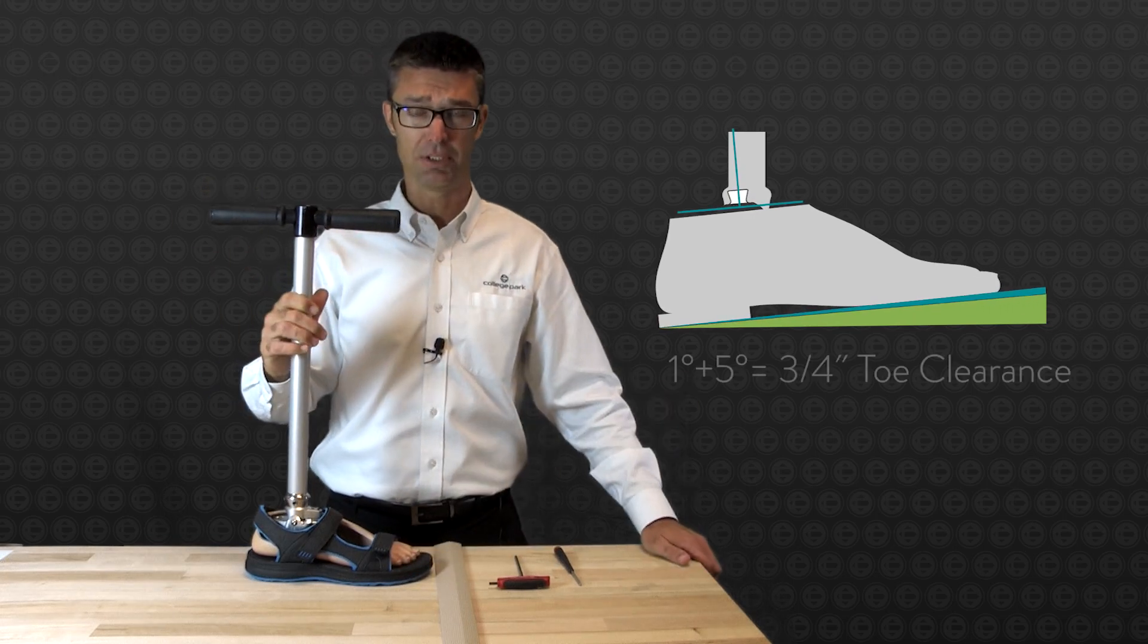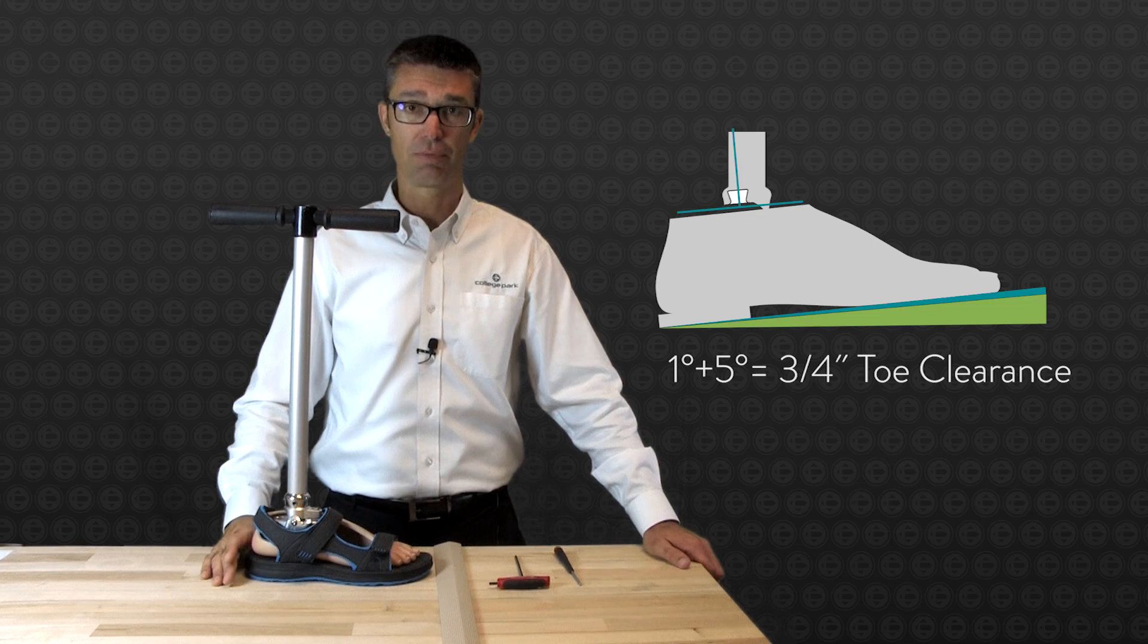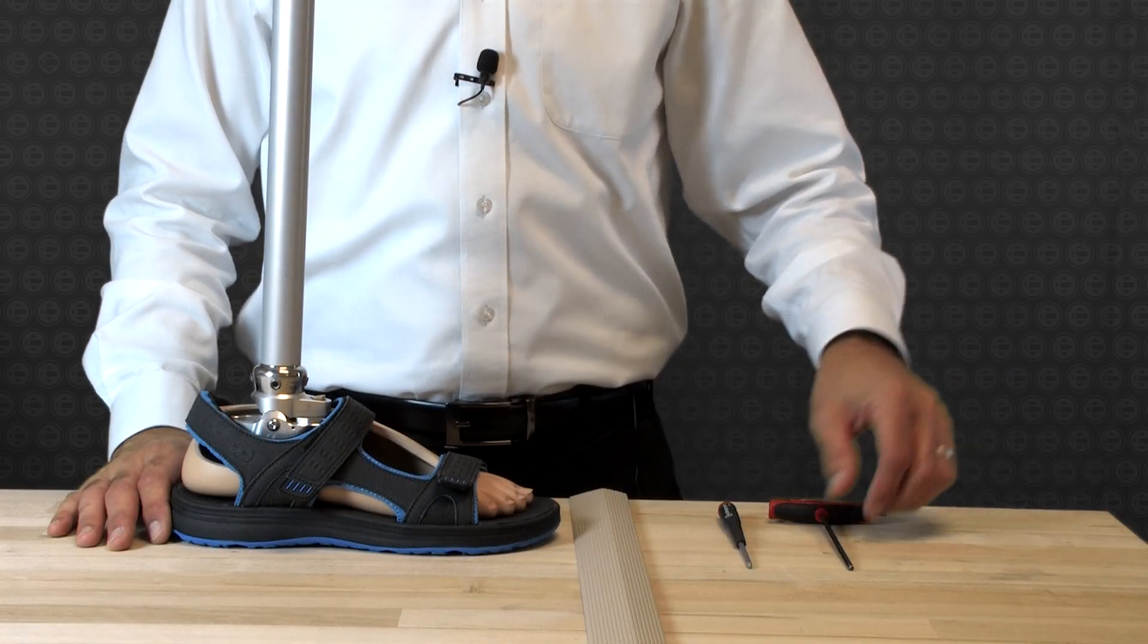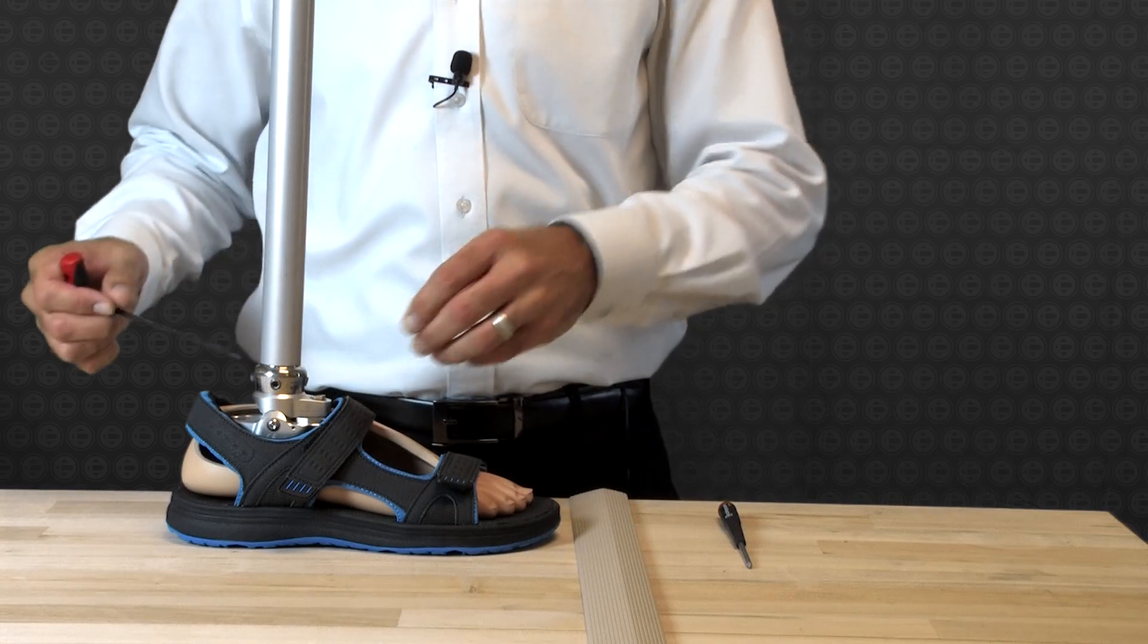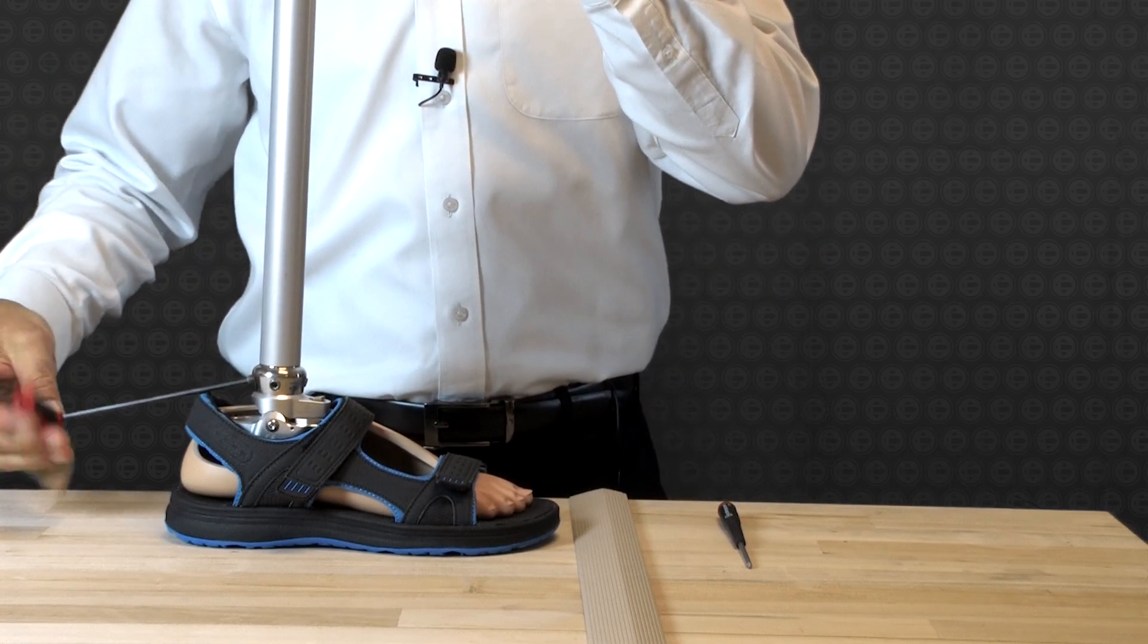If however you feel your patient needs some additional toe clearance, you can do that through alignment changes. We can dorsiflex the hydraulic housing of the Odyssey K2 to gain additional dorsiflexion range.